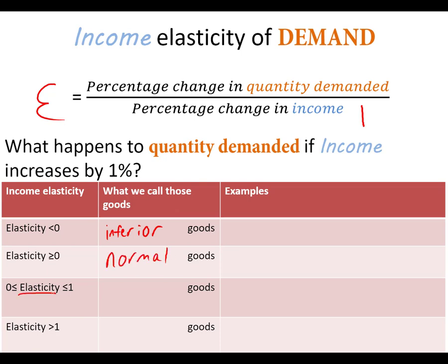Normal goods are divided into two categories. You have an elasticity between zero and one, and you have an elasticity greater than one. When the elasticity is between zero and one, we call those necessity goods. When the elasticity is greater than one, we call those luxury goods.